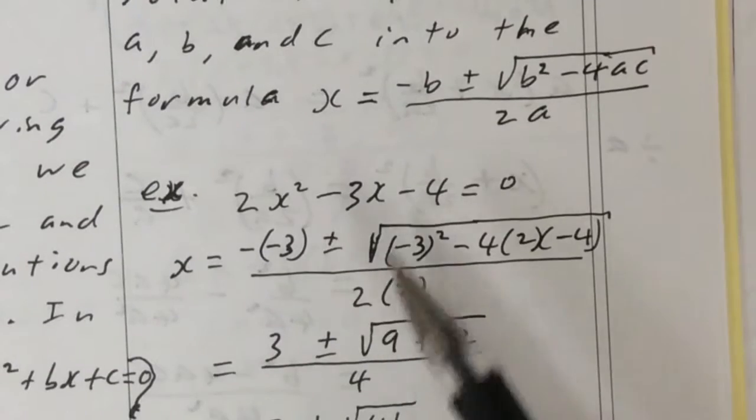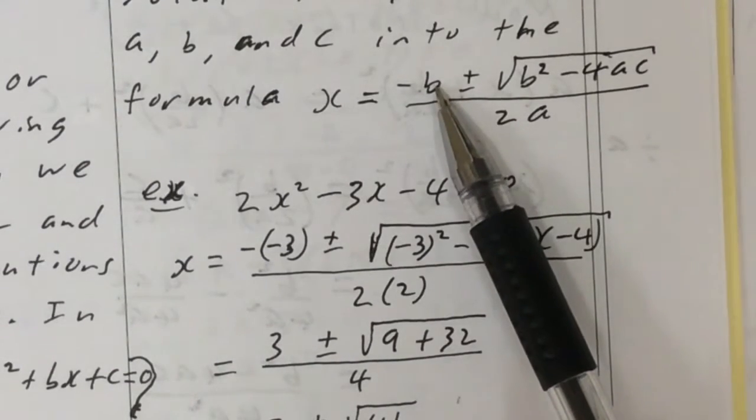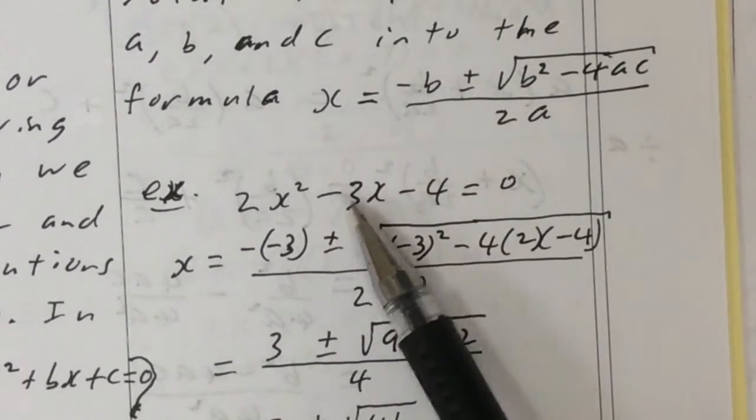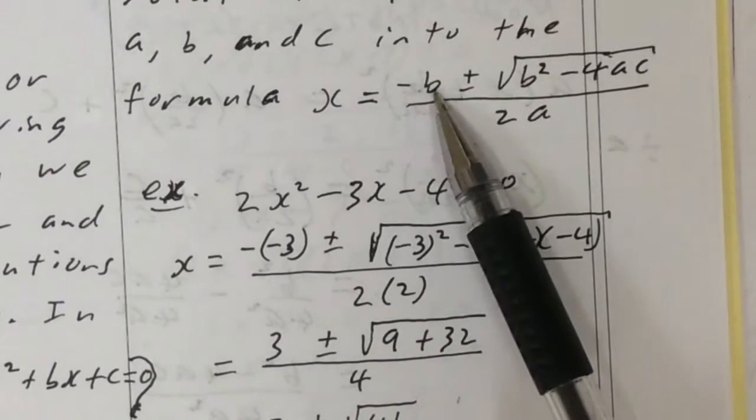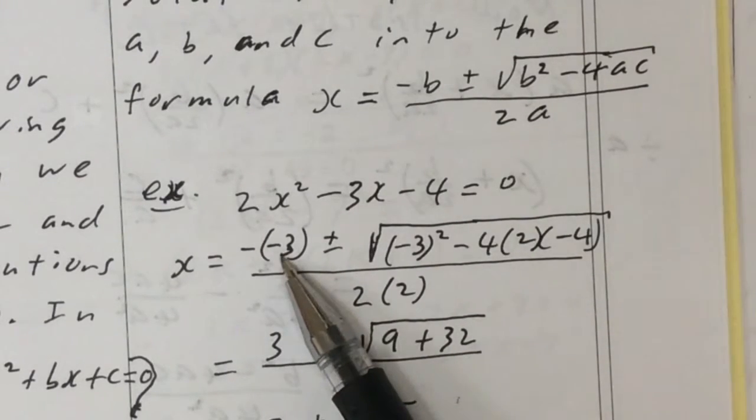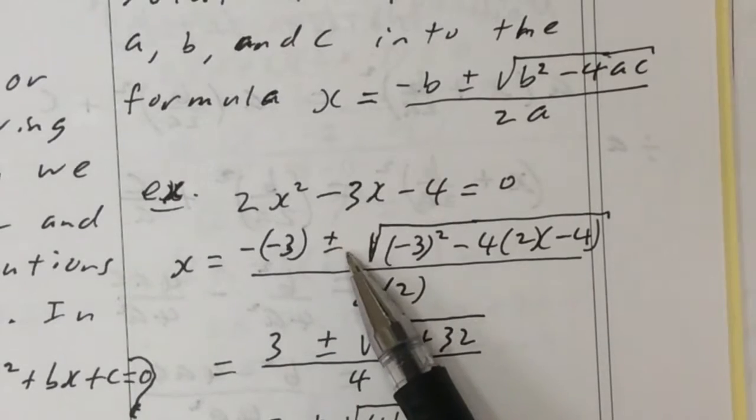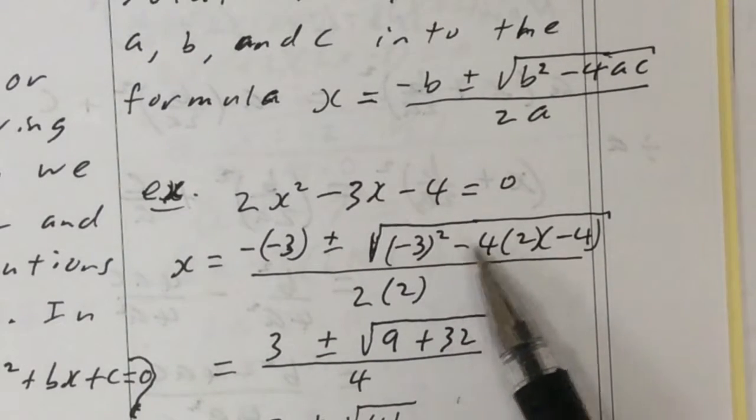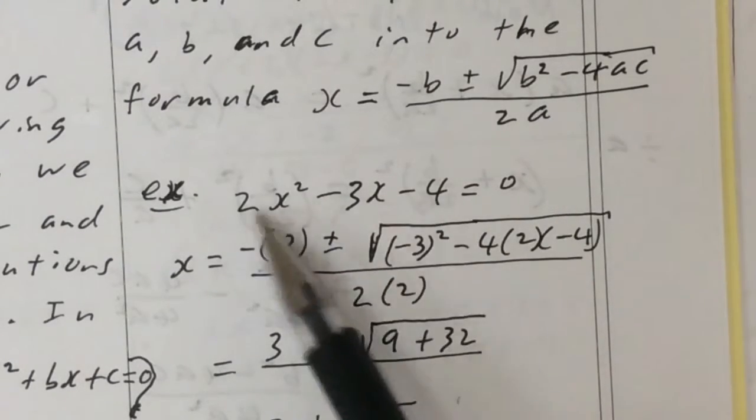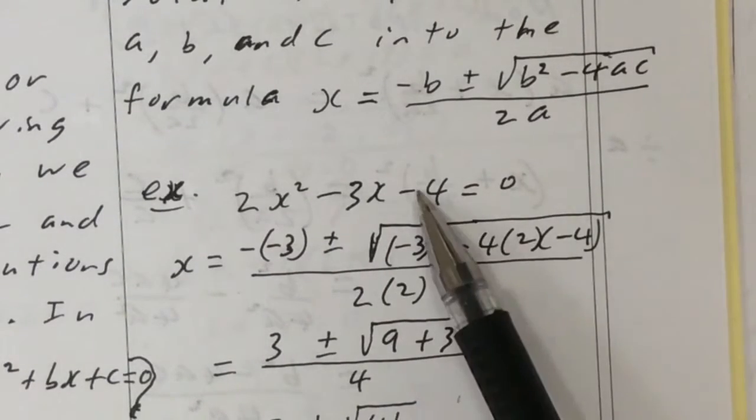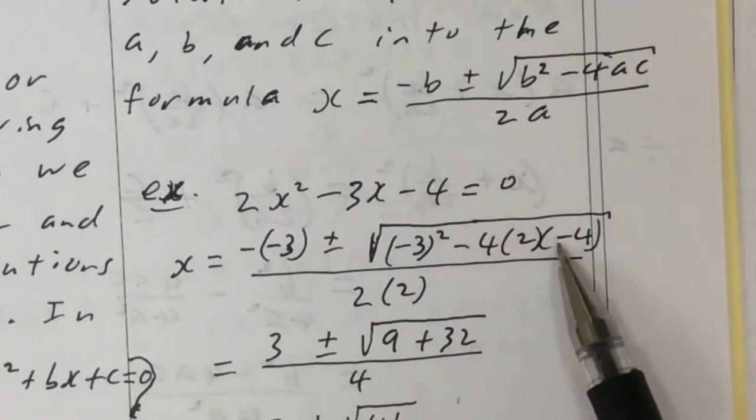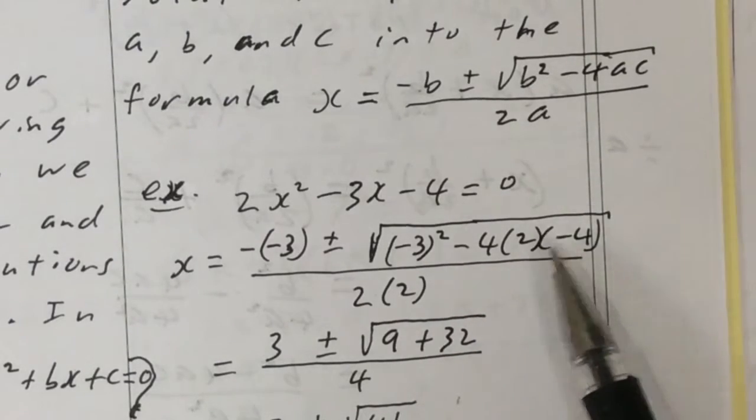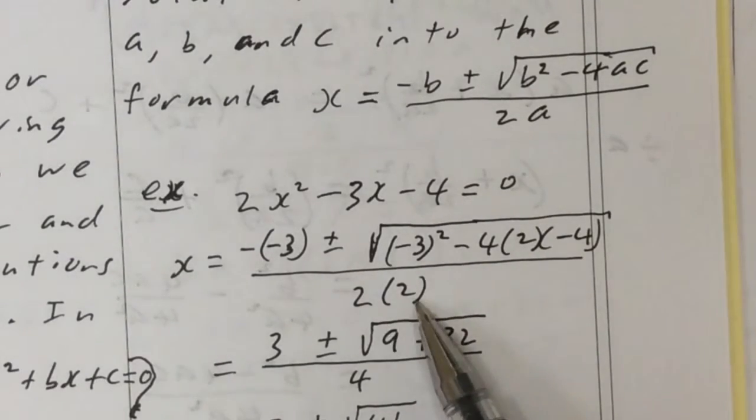Well, the b here is negative 3. So you've got to take the negative of b, so it's the negative of negative 3. Plus or minus b squared minus 4 times a, which is 2, times c, which is negative 4. You've got to take the sign with it. Then all over 2 times a.